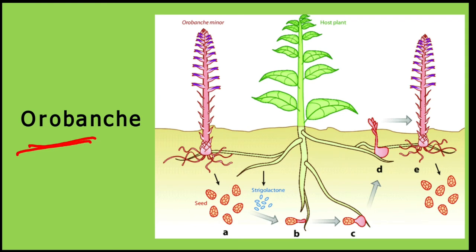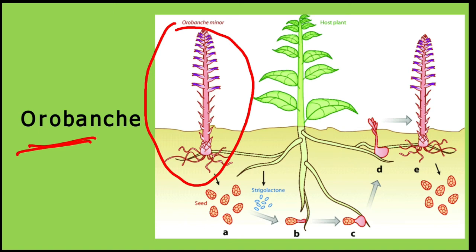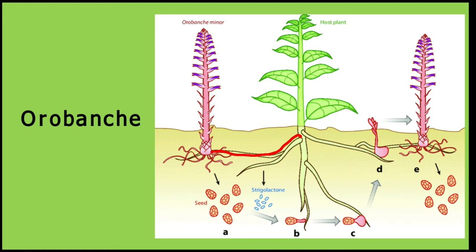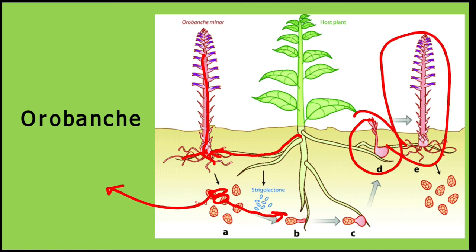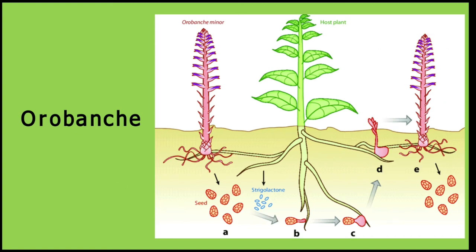Orobanche is a complete root parasite. It germinates in the roots of host plants and takes nutrition from there. Seeds are also formed, which infect roots of other plants, germinate and form new plants — this is how its life cycle continues. Chlorophyll is absent in it, so it is not green and is completely dependent on the host for all its nutrition.